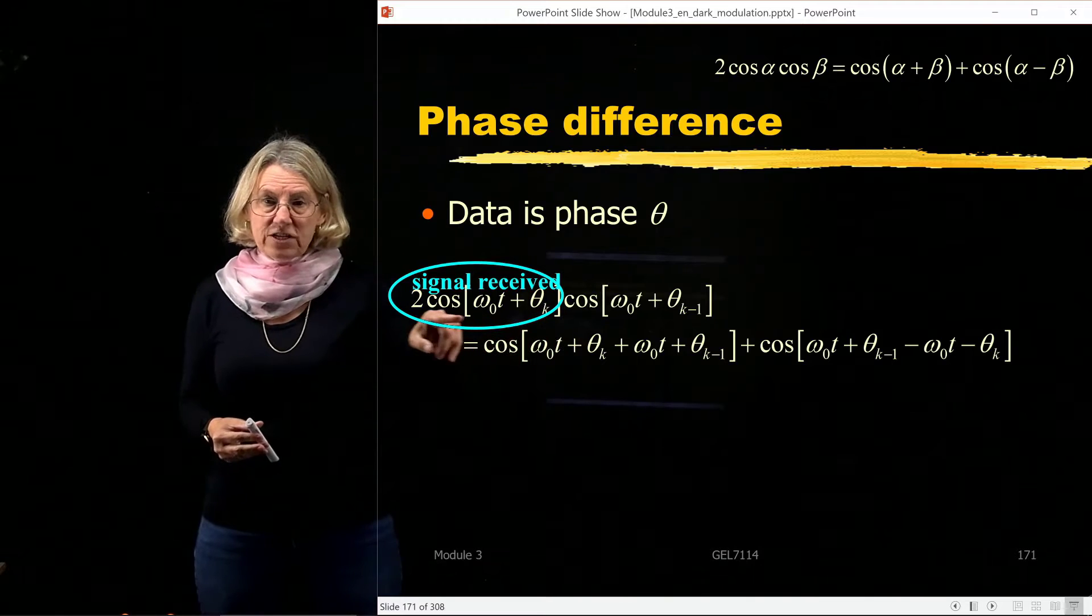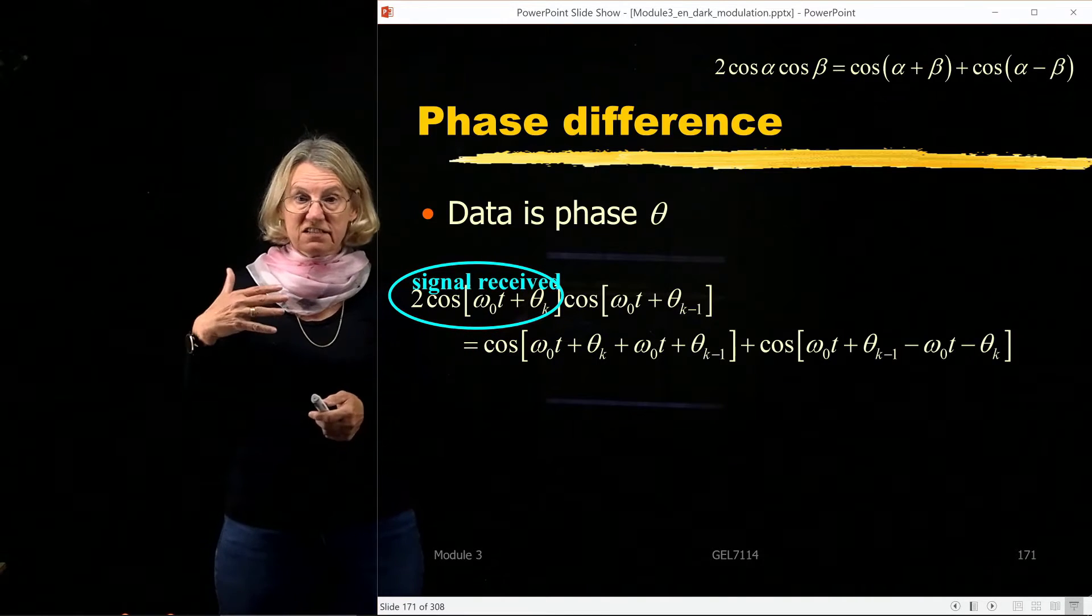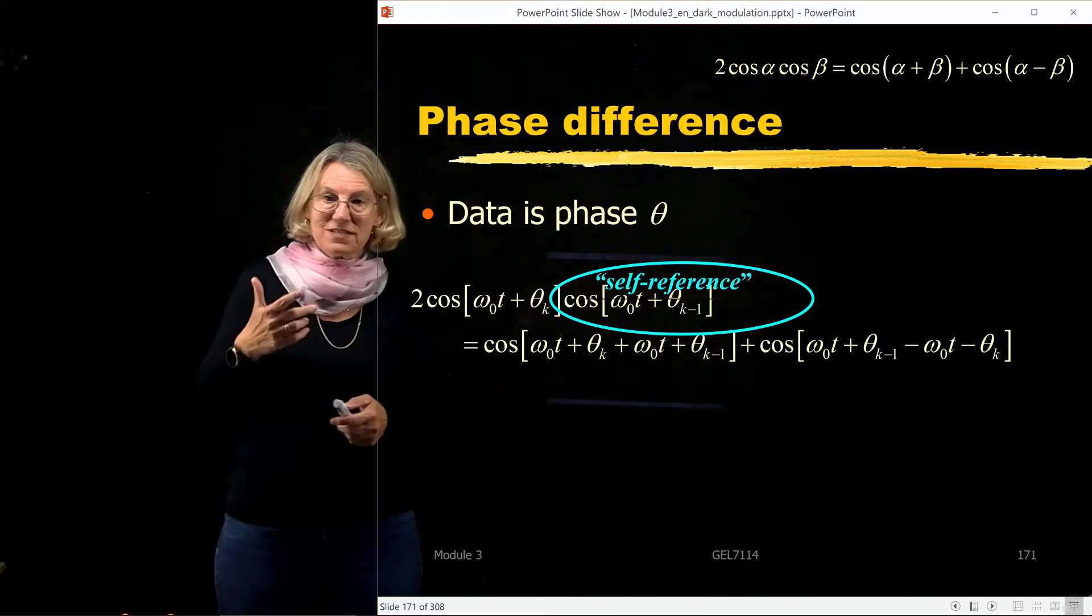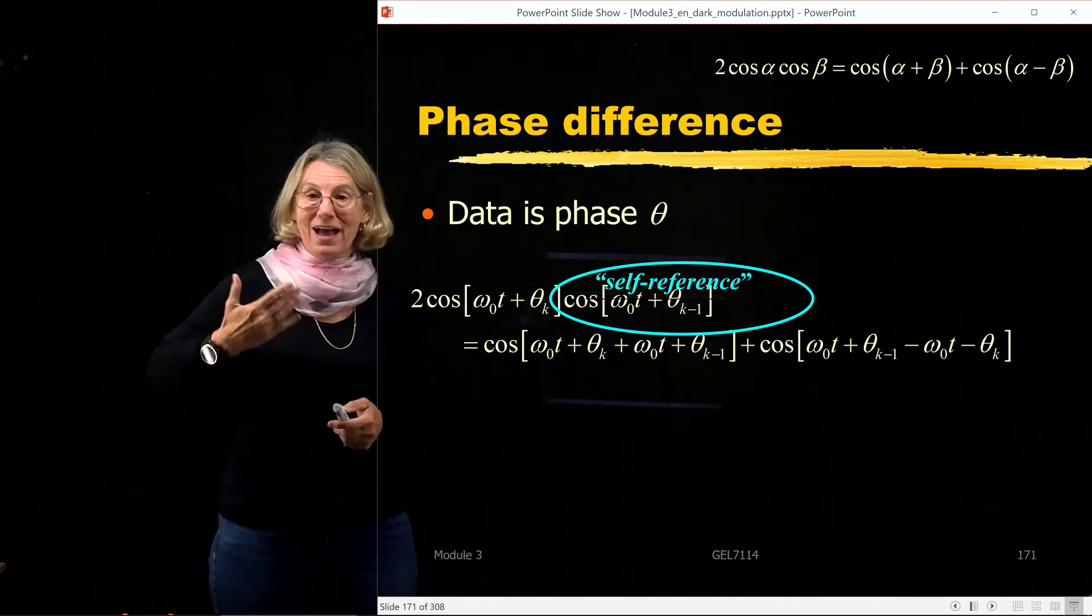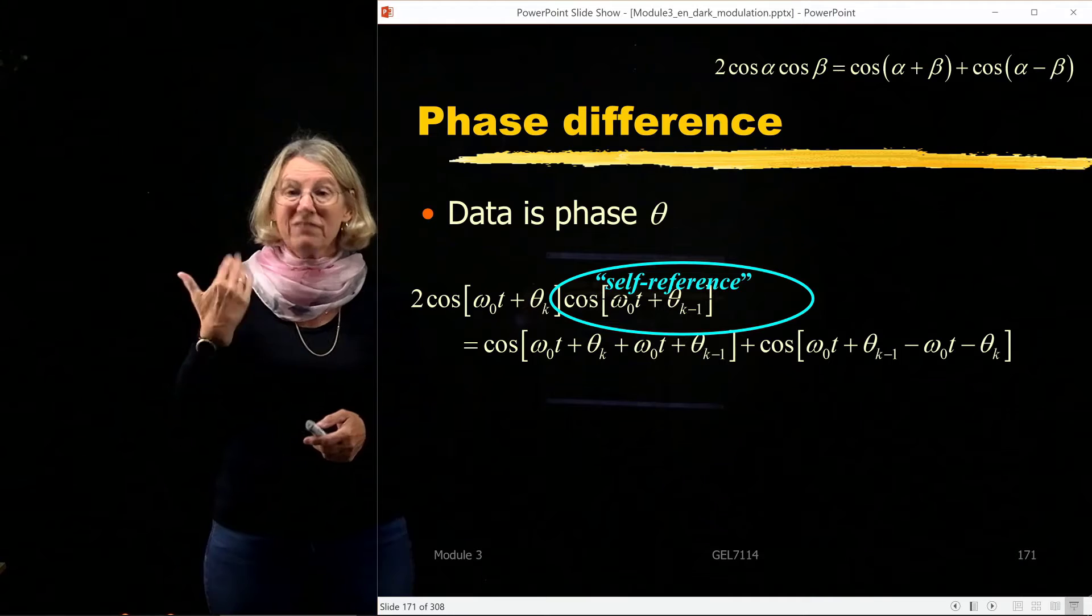I have one term which is the signal I'm trying to recover at instant k, and then there's a second branch which was the self-reference, which is a little bit older. Remember, I have a delay of one symbol. So I'm going to be looking at the previous symbol, so the k minus 1 symbol.